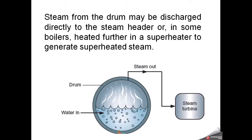Steam from the drum may be discharged directly to the steam header, or in some boilers it is heated further in a superheater to generate superheated steam. In the diagram, water droplets and steam separate from each other at this layer, and steam exits — either going directly to the steam turbine or being superheated first before being sent to the turbine.